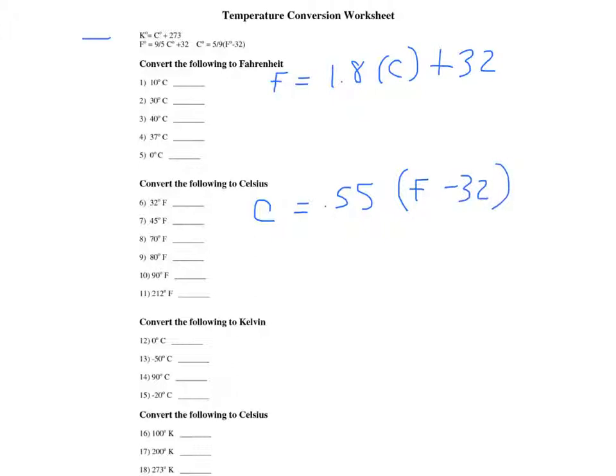I am using these equations up here. I have just taken the 9 fifths and the 5 ninths and converted those to decimal form as would be required for a calculator. Our third example would be convert the following to Kelvin. Kelvin would equal Celsius plus 273.